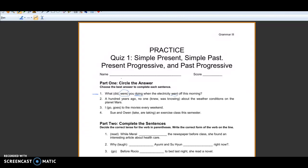Number two, a hundred years ago no one knew or no one was knowing about the weather conditions on the planet Mars. In this case we're comparing between simple past and past progressive. So which one would we choose? In this case we know that the verb know, K-N-O-W, is not usually used in the progressive. It's not used in the progressive form because it's a thinking or perceiving verb. So we need to choose the simple past knew.